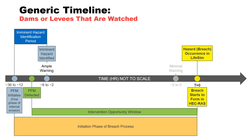The time period from when the failure mode is detected up until recognition that breach is virtually certain to occur is the window of opportunity for intervention actions to arrest the failure mode development. The imminent hazard identification time is the time relative to breach formation at time zero when someone recognizes that the breach is going to occur or is occurring, determines that the population at risk needs to be evacuated, and initiates the warning and evacuation process. For internal erosion, this is usually associated with significant material movement being observed, unsuccessful intervention, and recognition that breach is virtually certain to occur. Therefore, the imminent hazard identification likely occurs before formation for dams or levees that are watched.